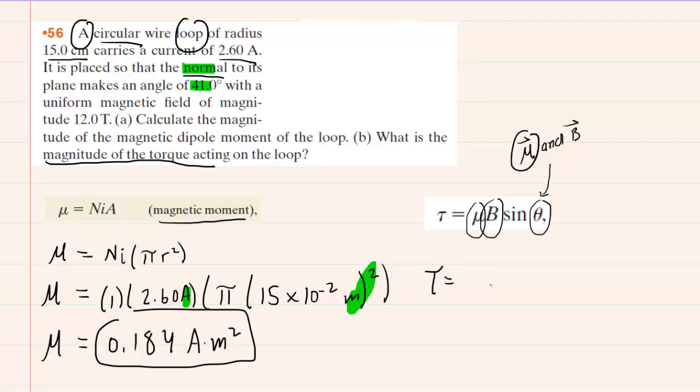We can simply now plug in the known values. We have the magnetic moment determined from part A of the question multiplied by the magnetic field strength, that was given as 12 tesla, and then multiplied by the sine of 41 degrees. When you work this out, you will end up with about 1.45. The units here are a little messy because you're multiplying amps meters squared by tesla, but basically we might recall that for torque, the standard unit works out to be Newton meters. So this would be the correct answer to part B.